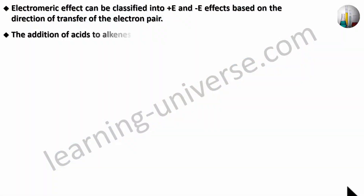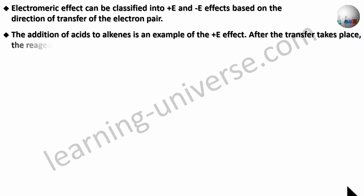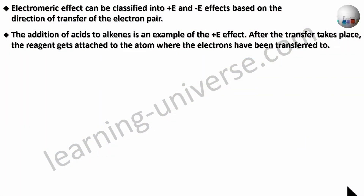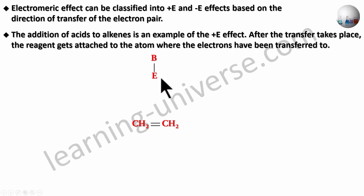After the transfer takes place, the reagent gets attached to the atom where the electrons have been transferred to. Let's look at a simple animation showing how a plus E effect takes place. This is the alkene and this is a group BE, where B stands for base and E stands for electrophile. Electrophile is a species deficient in electrons and base is electron rich. Imagine atom B is more electronegative than atom E.